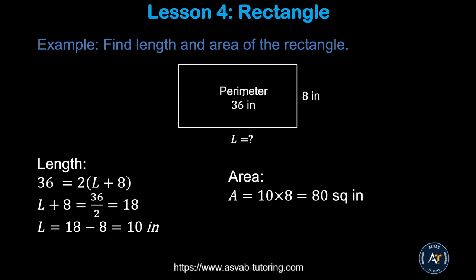Here is another problem where the perimeter is given as 36 inches and one side — the width — is given as 8. You have to find the length. Since opposite sides are the same, use the formula: 36 equals 2 times (L + 8). Divide both sides by 2 to get 18, then subtract 8 to get length equals 10 inches. The area is 10 times 8, which is 80 square inches.